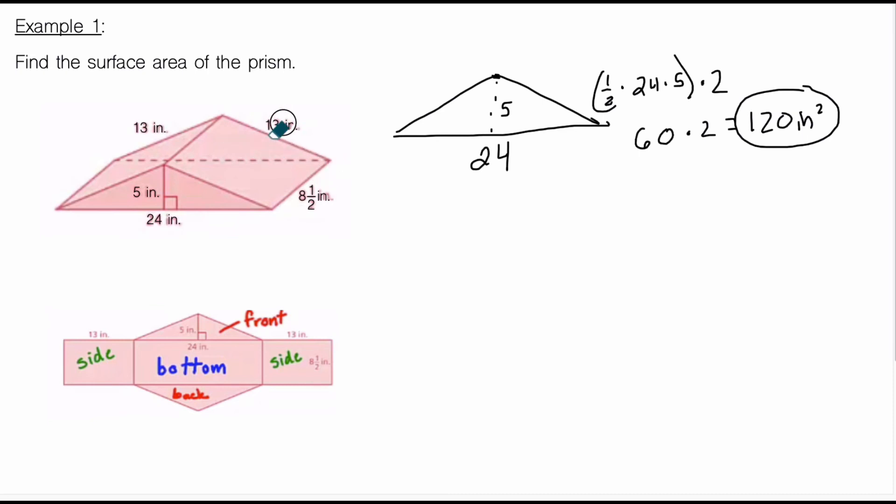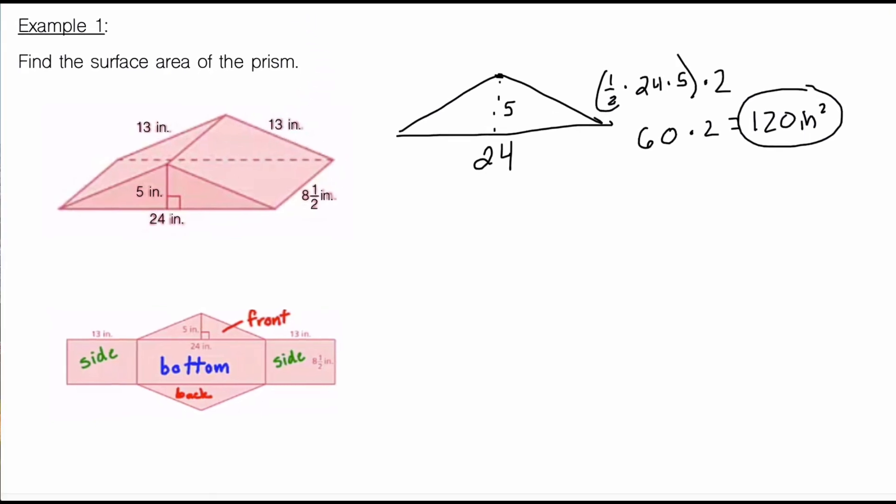Next, we are going to find the 3 rectangles. In this case, we've got a rectangle over here. And that rectangle is 13 by 8 and a half. The 13 is pretty easy to see, it's running right along this side. The 8 and a half, I figured if this is 8 and a half, then the side across from it must also be 8 and a half. So 13 by 8 and 1 half, which, feel free to use a calculator. Either way, the math works out that this is 110.5.